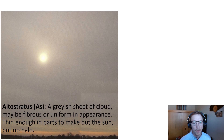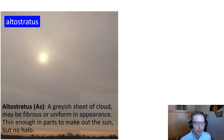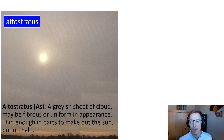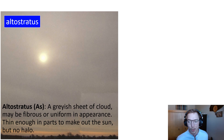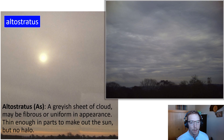Next we move into middle clouds: altostratus and altocumulus. Altostratus clouds are a formless layer of grayish clouds covering all or a large portion of the sky. Generally we can see the sun through them as a bright, diffuse-looking disk. They can produce infrequent precipitation like light snow or drizzle, and they're commonly associated with approaching warm fronts that may thicken into darker gray nimbostratus layers.